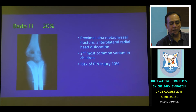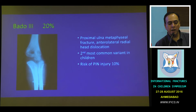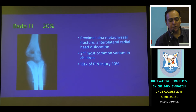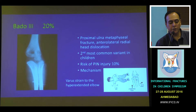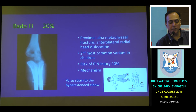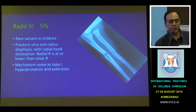Bado Type 3 injuries are more commonly seen in children, accounting for about 20%. There is a proximal ulnar metaphyseal fracture and anterolateral radial head dislocation, making it the second most common variant. There is a risk of posterior interosseous nerve injuries in about 10% of these cases. The mechanism of injury is a fall on the hyperextended elbow, causing a varus strain which causes the ulna to fail in tension on the radial side.